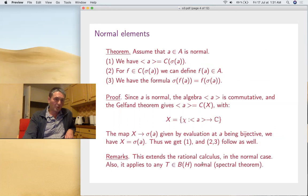Now, you can do a lot of things with Gelfand. First, normal elements, which can be applied to normal operators. We get the spectral theorem. First, the algebra generated by such a normal element is commutative. By Gelfand, if you compute the space of characters, it's actually the spectrum itself. As you have this, everything about a becomes about functions. You can apply functions to a and have the formula: σ(f(a)) = f(σ(a)) for any continuous function on the spectrum. This extends the rational calculus we did last time in the normal case. For operators, it's more or less the spectral theorem.